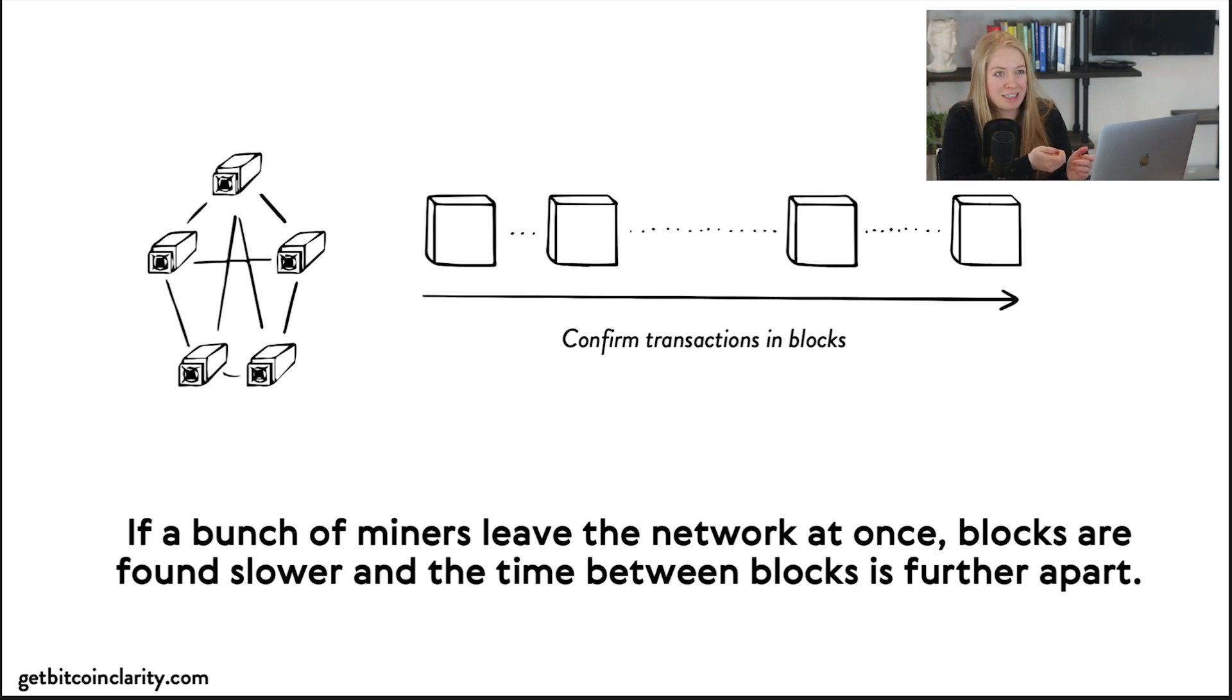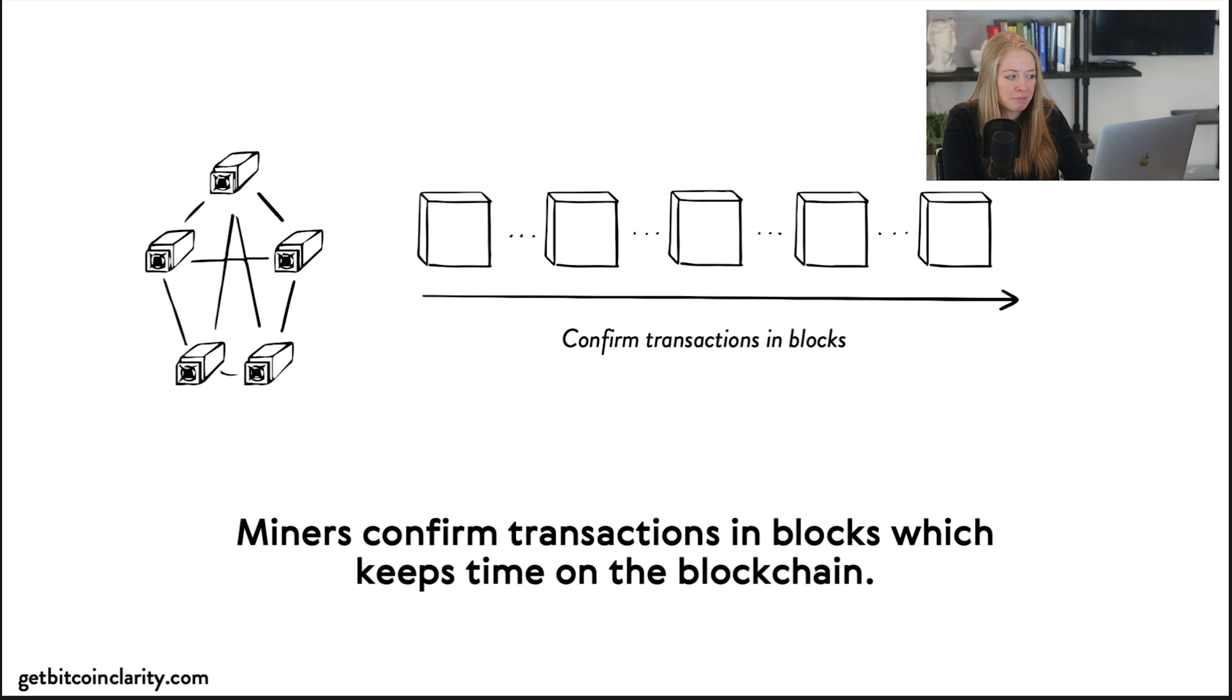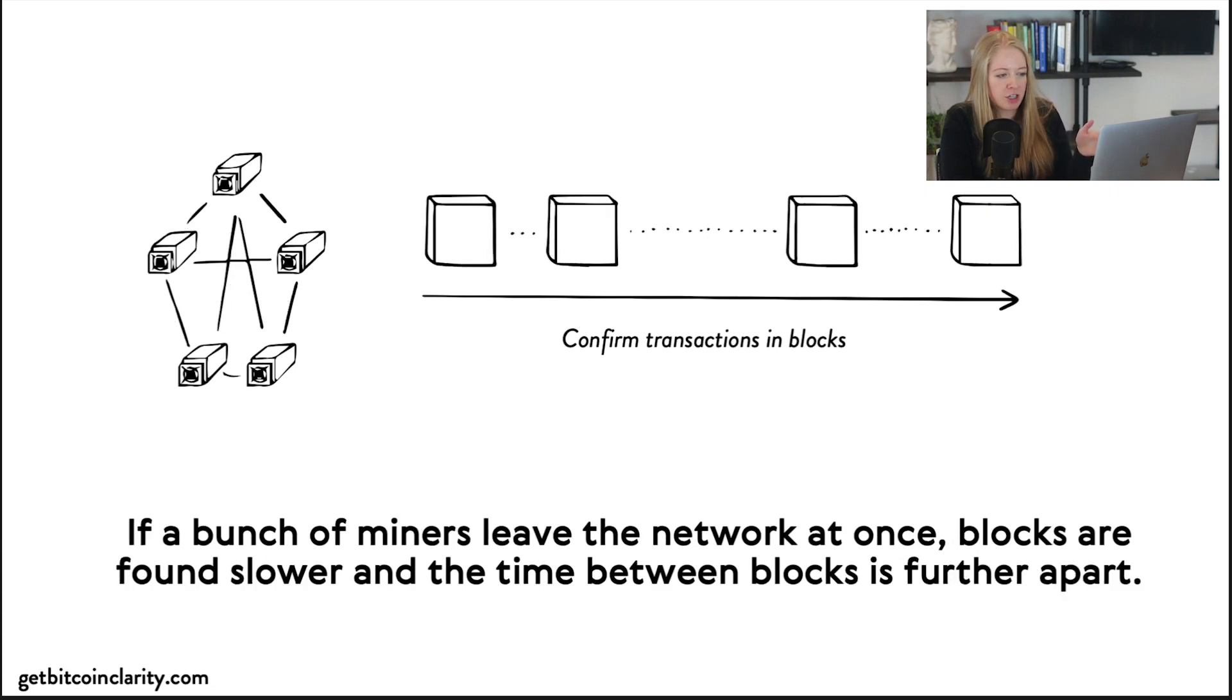So it doesn't actually detect faster or slower, it only detects the number of blocks and it counts 2,016 blocks, which seems like an arbitrary number, but actually if we go back to this slide again, 2,016 blocks—if you were to find a block every 10 minutes, that comes out to exactly two weeks. So every about every two weeks, the network difficulty is changed to recalibrate this network at finding blocks at about 10 minutes.